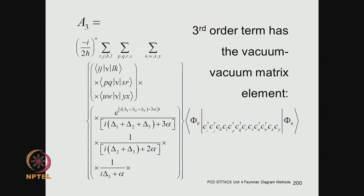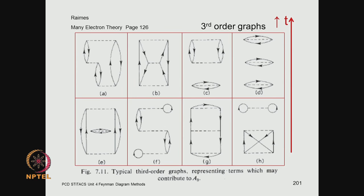Let us have a quick look at the third order terms. The third order terms will have contributions from the time integrals — you will have a product of three of these terms and then three sets of four operators: c_i dagger, c_j dagger, c_k, c_l, and likewise for the next two sets. So you have a set of twelve operators sitting in the middle. These are third-order graphs.